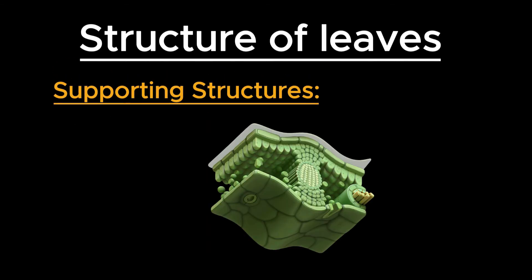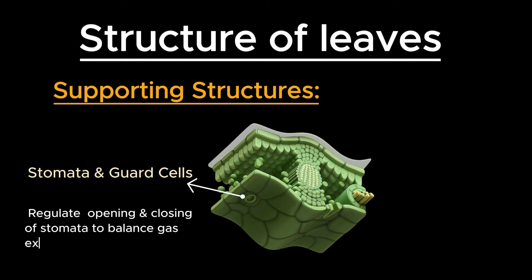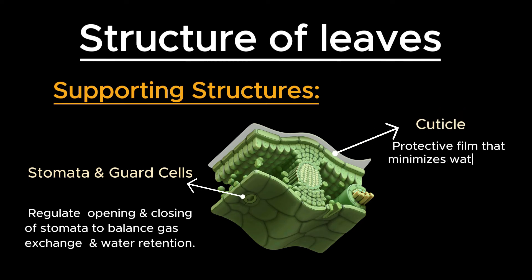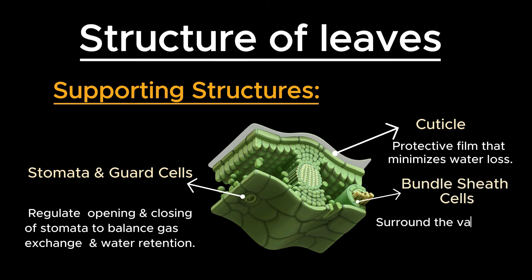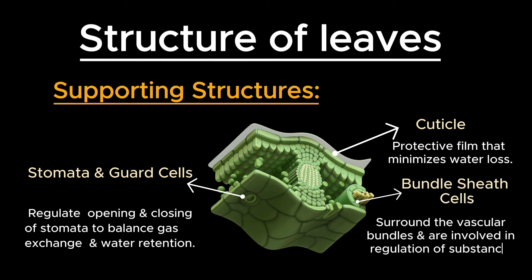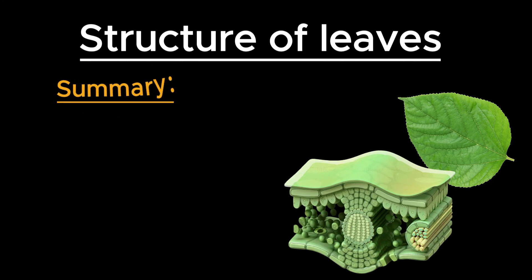Let's briefly discuss some of the supporting structures in a plant leaf. Guard cells regulate the opening and closing of stomata to balance gas exchange and water retention. The cuticle is a protective film that minimizes water loss. Bundle sheath cells surround the vascular bundles and are involved in the regulation of substances entering and exiting the vascular tissues.